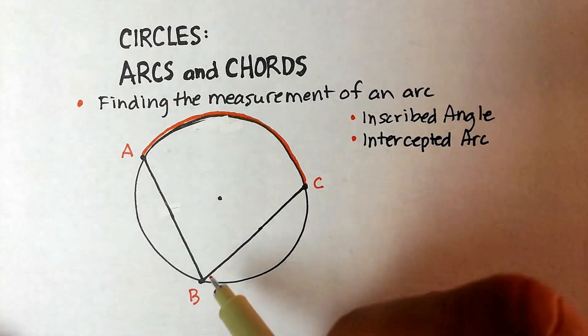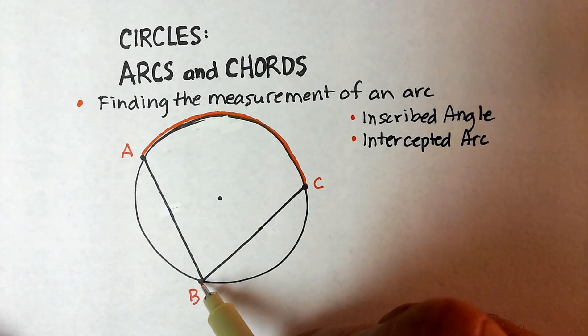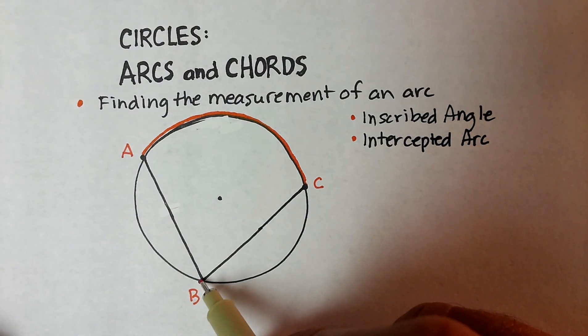Now the definition is that the vertex, where the two chords intersect, lies on the circumference.